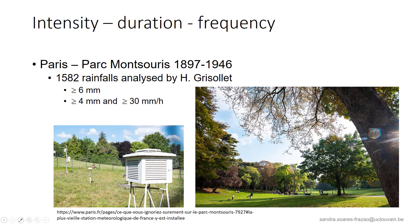We can easily imagine that for a given station, huge amounts of data are produced by those measurements. Therefore, we need a means to summarize the observations in order to characterize a given station. This summary can be provided by the intensity-duration-frequency curves. We can illustrate the construction of these curves through the measurements conducted by engineer Grisolet in Paris over a period of about 50 years. He analyzed 1,582 rainfalls using data from the Parc Montsouris, the oldest weather station in France, with the following selection criteria: more than 6 mm, or more than 4 mm but with an intensity larger than 30 mm per hour.